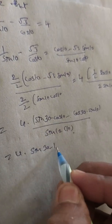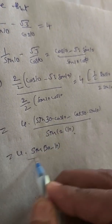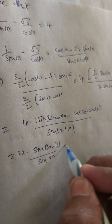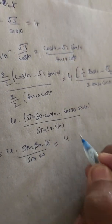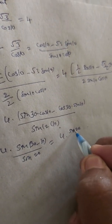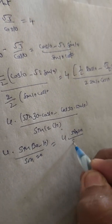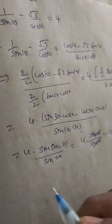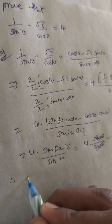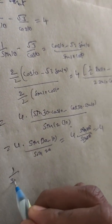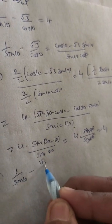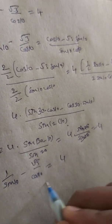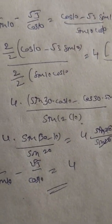Applying the identity sin(A - B), we get sin(30° - 10°) = sin(20°) divided by sin(20°), which equals 4 times sin(20°) divided by sin(20°). Sin(20°) cancels, giving 4. Therefore 1/sin(10°) minus √3/cos(10°) equals 4.